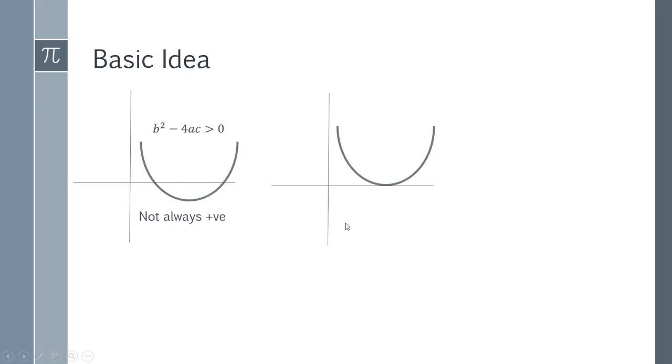We could have this situation as well where it's touching at one point and that's on the x-axis. So we've got a value of zero there. This is also not always positive because that zero isn't a positive or negative number. So this function isn't always positive. This will happen when b squared minus 4ac is equal to zero.